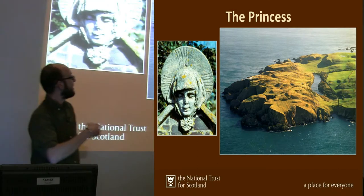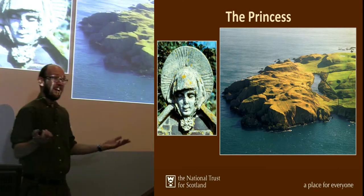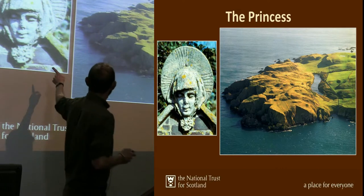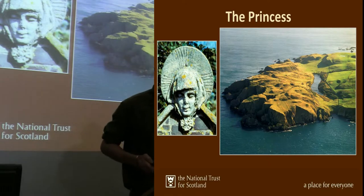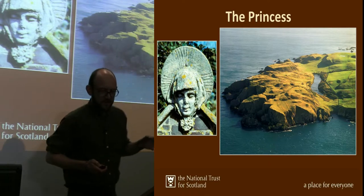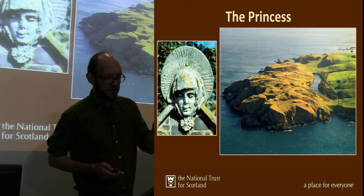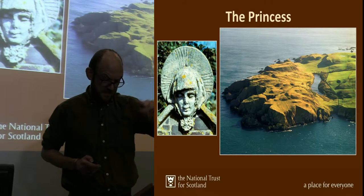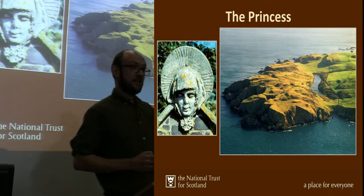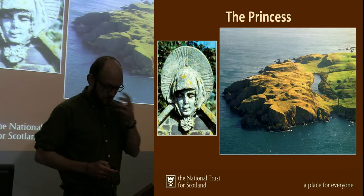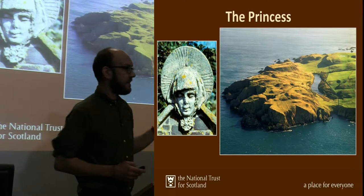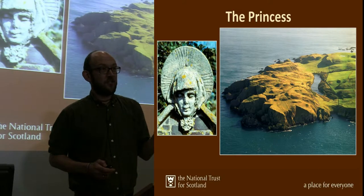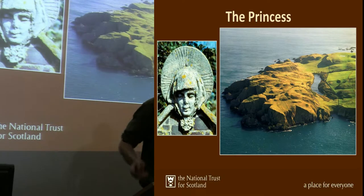This is St. Ab's Head. Princess Abba, born about 615, we think — the daughter of Eilfrith, who became the first king of Northumbria in about 604. Eilfrith was subsequently killed in battle in 615, and his family were exiled to Dalriada. It's there that the family converted to Christianity, and they're reputed to have been baptised on Iona. There's quite a geographical connection there.